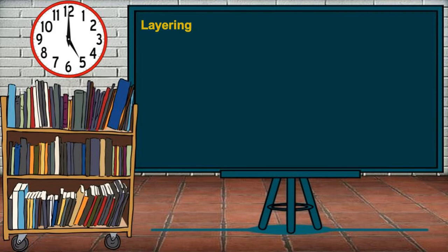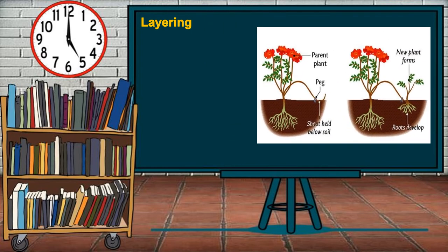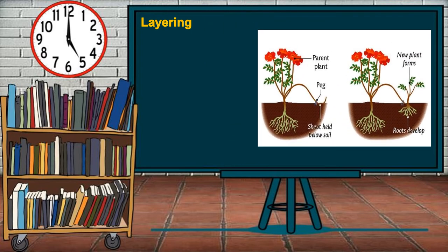Another example of a plant that grows by an artificial method is layering. This is a method by which a plant grows from the buried portion of the parent plant. This is done by bending a branch until it reaches the soil. The part touching the soil is partly covered, and as soon as the new plant is established, it is cut from the parent plant and transferred to a new place. Example is rose.